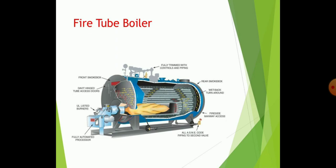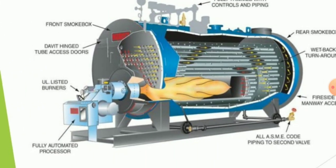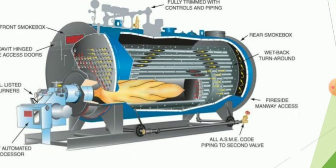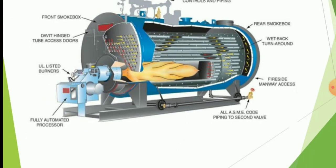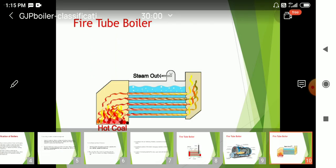Now, the cut section for fire tube boilers you can see in front of your screen. The clear arrangement shows in front of. There is shell arrangement, front smoke bag there. Deviated high-tube access doors are invented at there. And the fully automatic processor is given at that point. Rear smoke box and weight bag turn approach is attached at that point. This kind of boilers is actual working condition for all the industrial and high requirement of the particular steam where they are required.